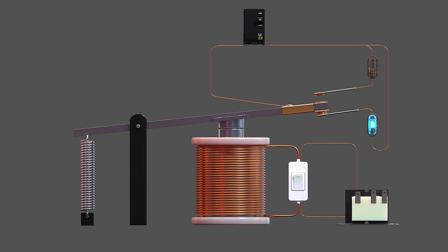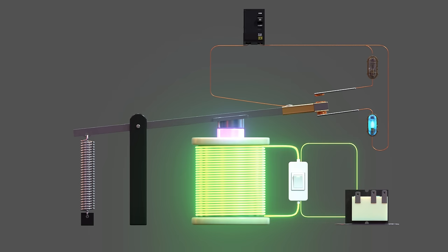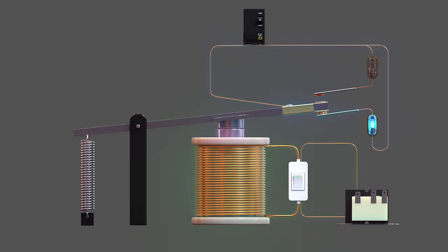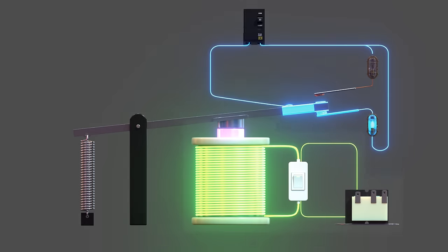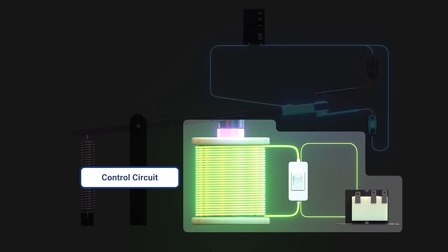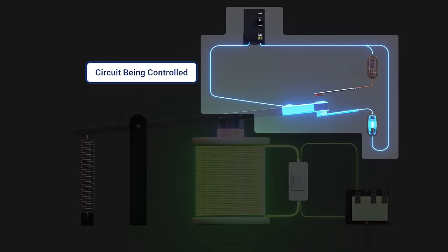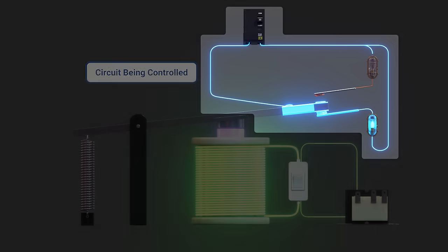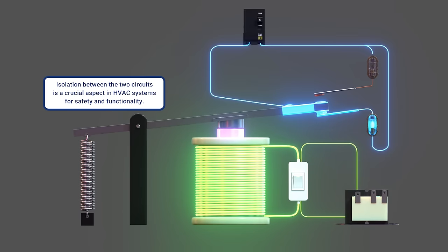Because relays are generally used for their ability to control a higher voltage or higher power circuit with a lower voltage or lower power signal, they provide isolation between the control circuit and the circuit being controlled, which is a crucial aspect in HVAC systems for safety and functionality.